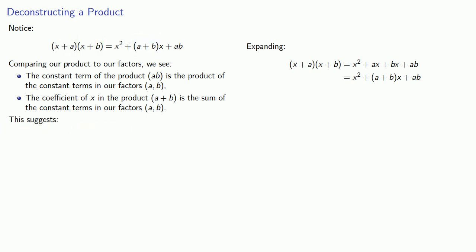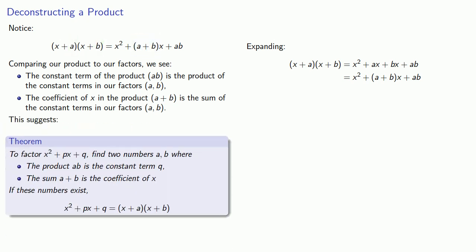This suggests the following theorem. To factor x squared plus px plus q, we want to find two numbers, a and b, where the product ab is the constant term q, and the sum a plus b is the coefficient of x. If these numbers exist, x squared plus px plus q is x plus a times x plus b.